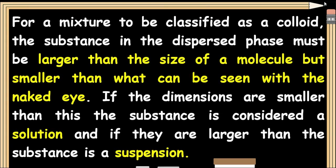For a mixture to be classified as a colloid, the substance in the dispersed phase must be larger than the size of a molecule but smaller than what can be seen with the naked eye. If the dimensions are smaller than this, it is considered a solution. And if they are larger, it is a suspension.